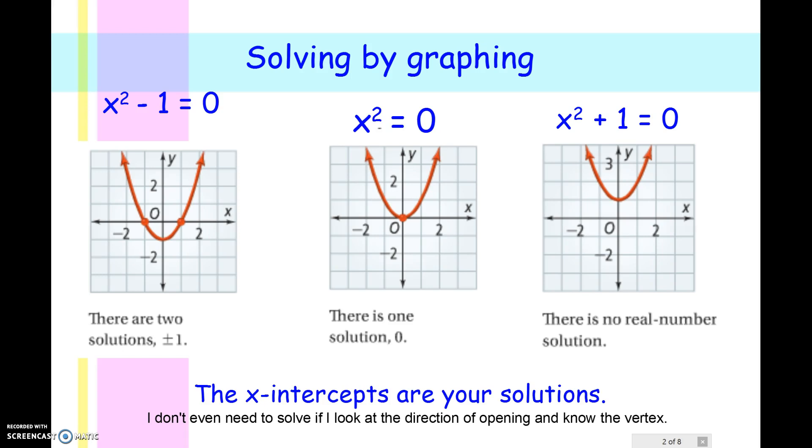When you're solving by graphing, there are three possibilities. You can have two solutions, which is when it hits the x-axis in two different places. You can have one solution, which is when it hits the x-axis in one place or the vertex is on the x-axis. Or you could have no real number solution. These are the ones that are either going to be above the x-axis or below the x-axis, so they'll never hit the x-axis.